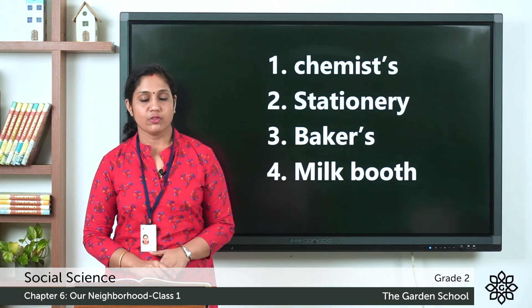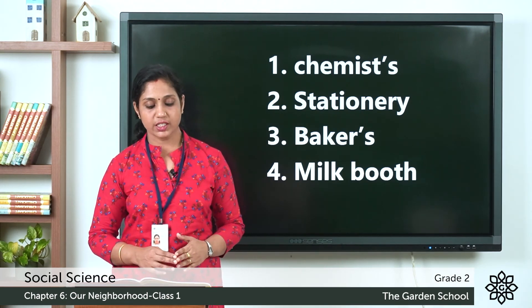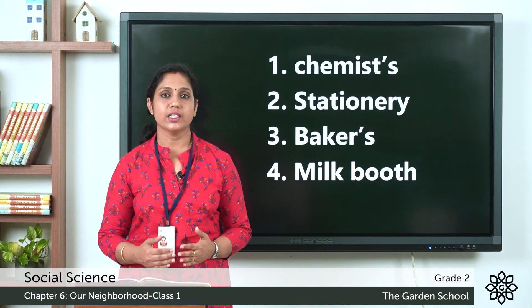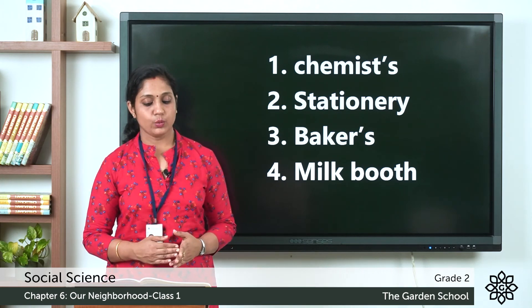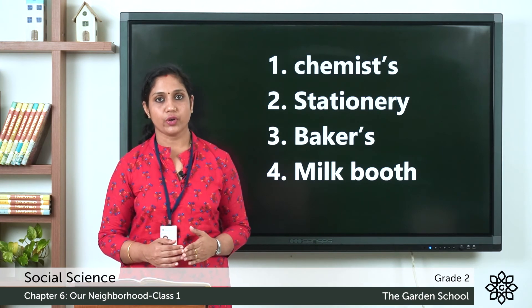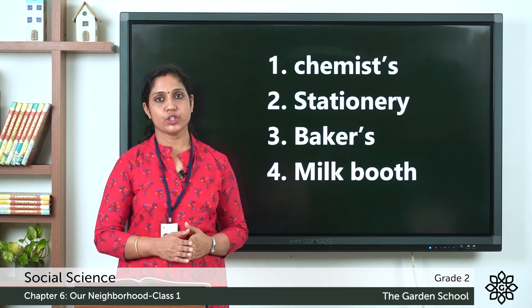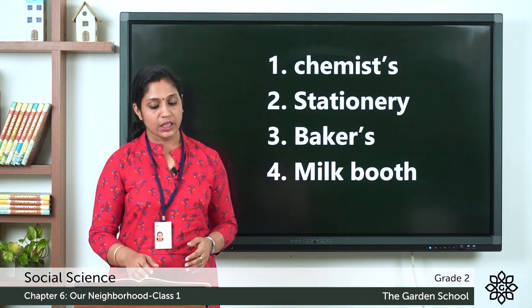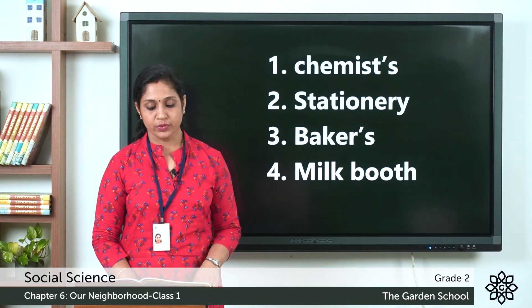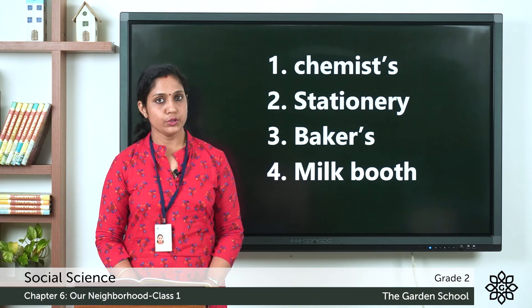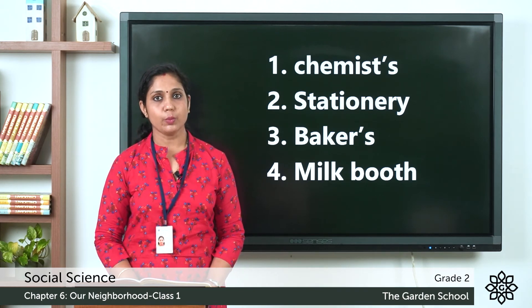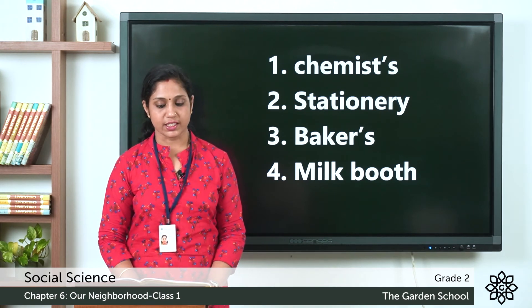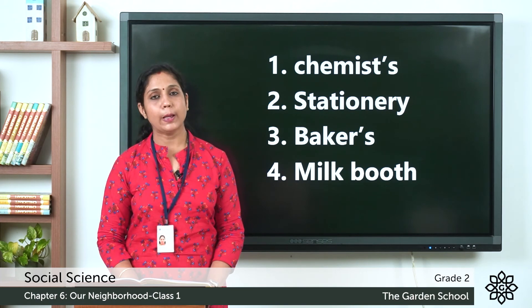Now let's check the answers. First: Sarah's grandmother needs medicines — Sarah must go to the chemist shop, as you get medicines from a chemist shop. Second: The teacher wants a new drawing book — Sarah must go to the stationery shop, where we get writing materials like books, pens, pencils, etc. Third: Sarah's birthday is next Sunday — it is the baker's shop where she can order her birthday cake. Fourth: There is no milk to make tea for the guests — Sarah's father must get milk from the milk booth.